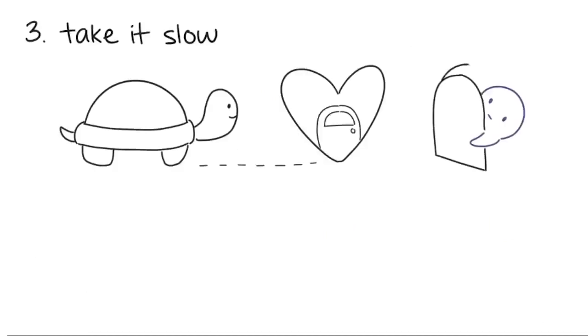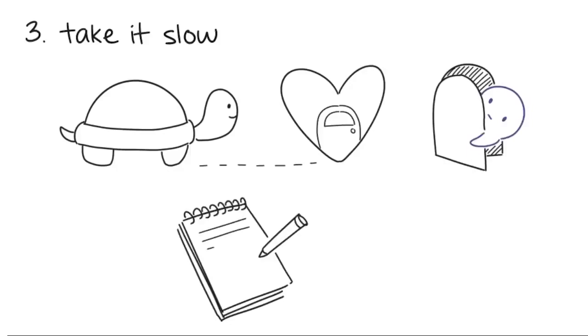Number 3. Take it slow. A slow and steady pace wins the race to an introvert's heart. They're careful about who they let in. They like to gather as much information as possible before they display more affection towards people. While their self-control might